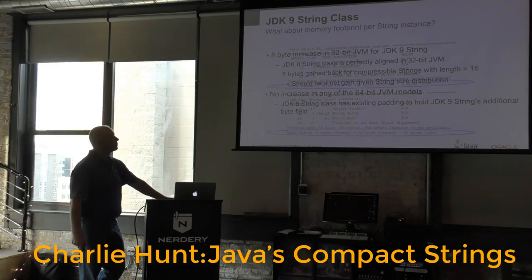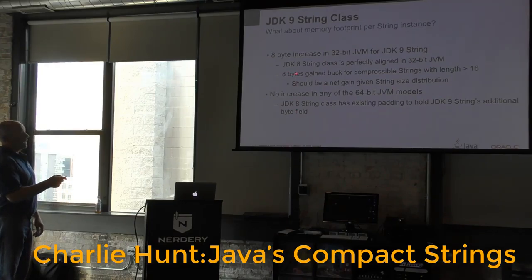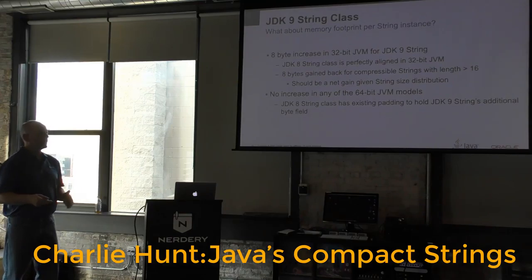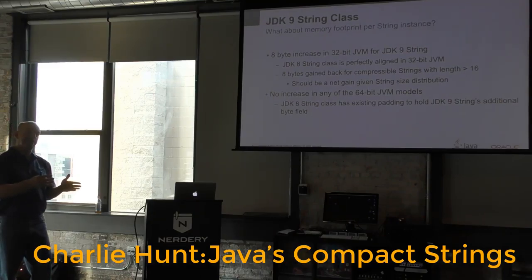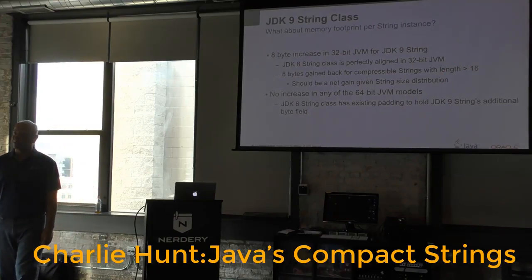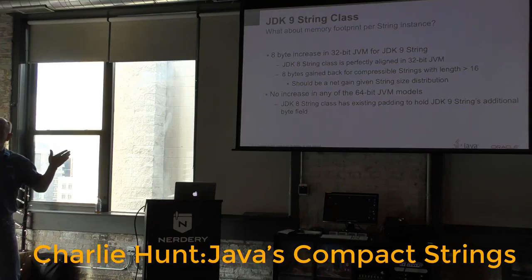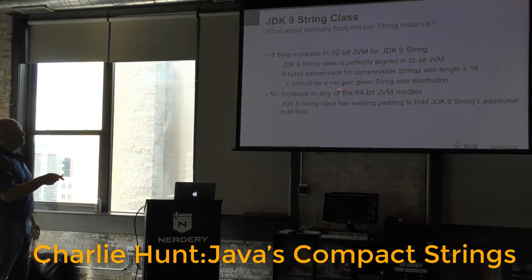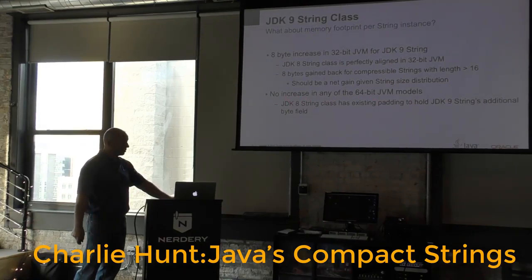For the 32-bit JVM, we can gain back those 8 extra bytes as soon as a string is at least 16 characters long — because with single-byte character representation, we use half as many bytes, recovering that overhead. Given the distribution we saw showing most strings are less than 35 characters, this should be a net gain overall for 32-bit JVMs, and there's no size increase for 64-bit JVMs.